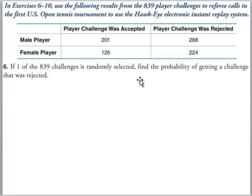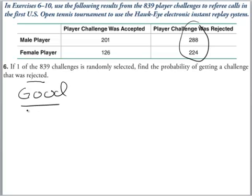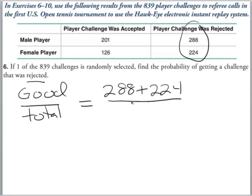Let's look at another example. What happens when we have data in categories? In this case we have a bunch of tennis players broken up by gender, male and female, and then broken up by whether or not their challenge was accepted. Now if we choose one of these 839 challenges at random, what's the probability of getting a challenge that was rejected? Well, all of these challenges were rejected, so it still goes back to the basics of probability, which is just good over total. In this case our good are all the rejected, so 288 plus 224, and the total is just all 839 challenges.